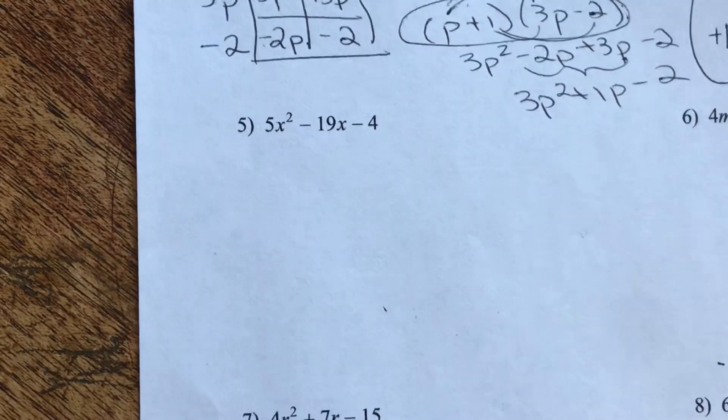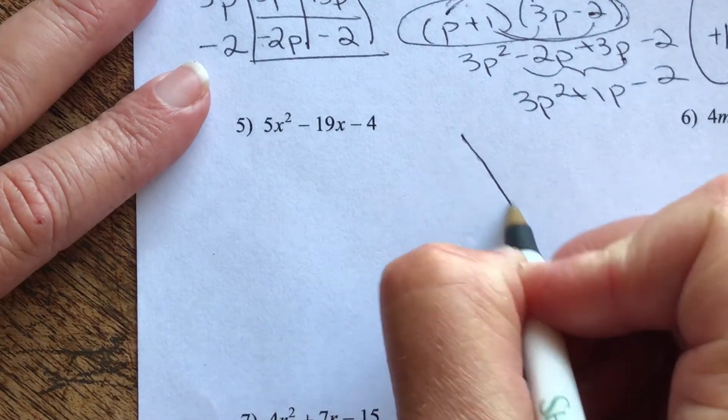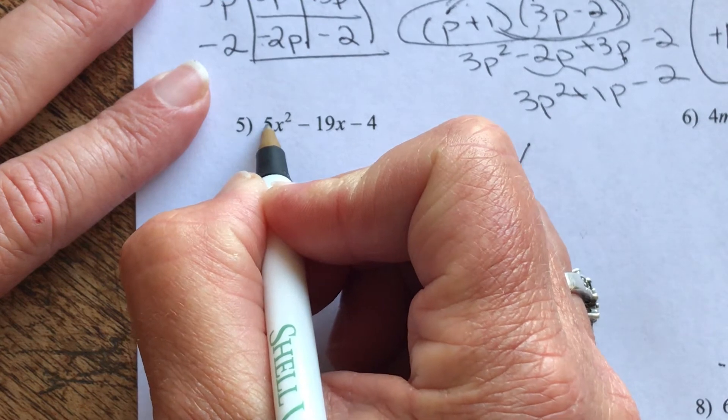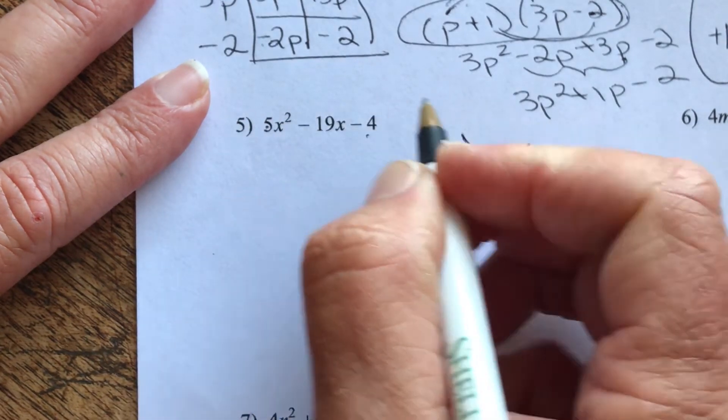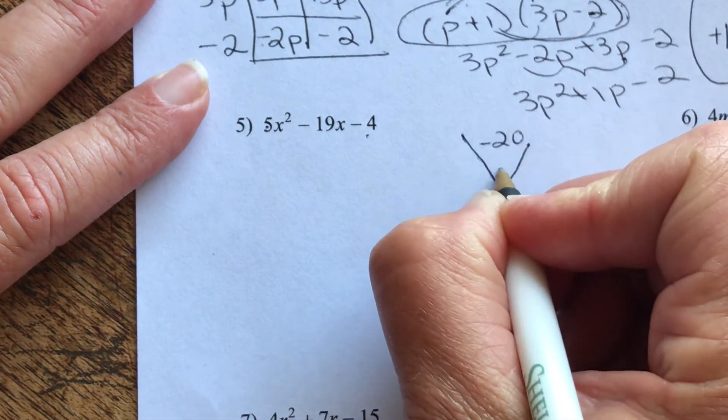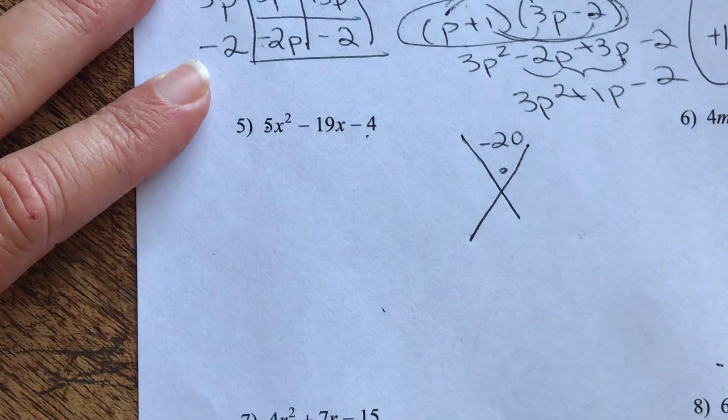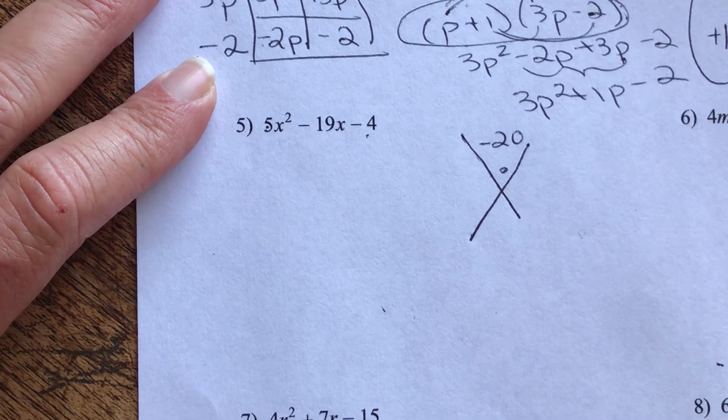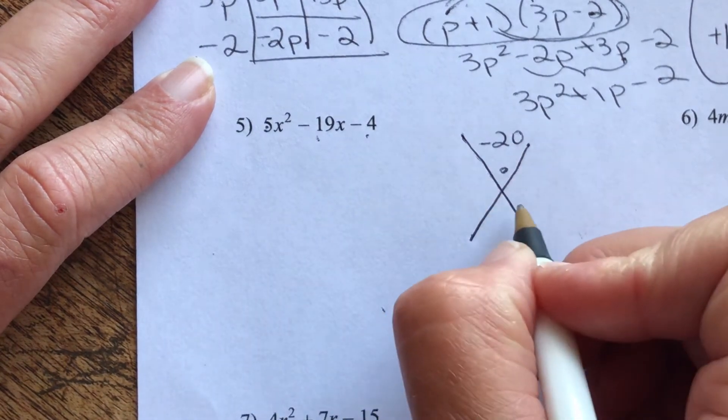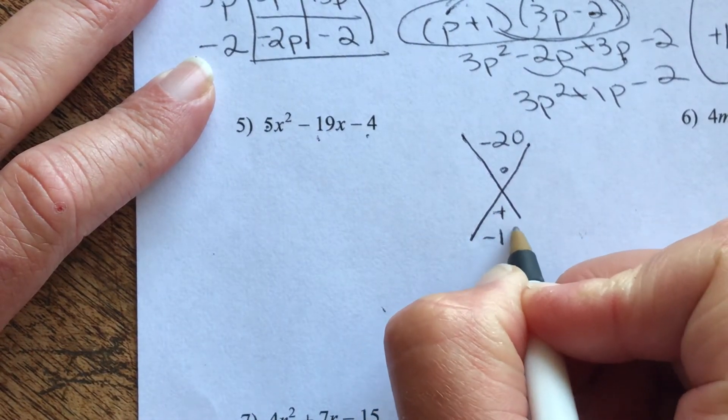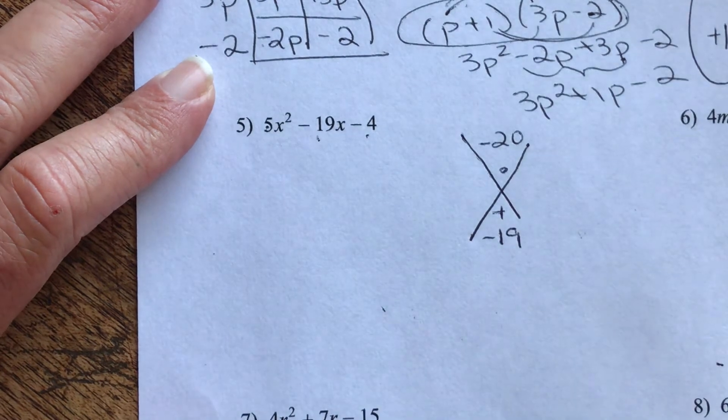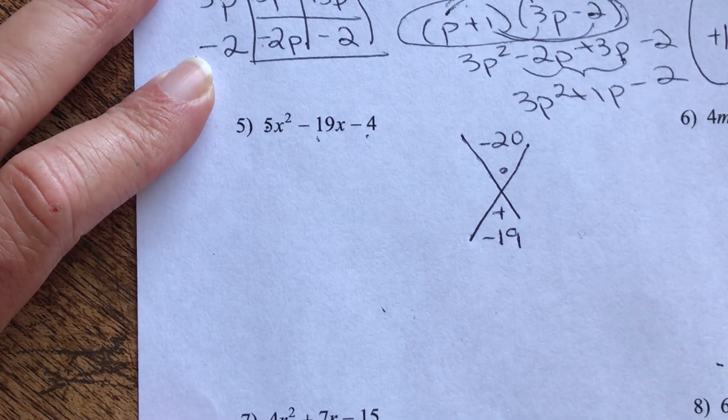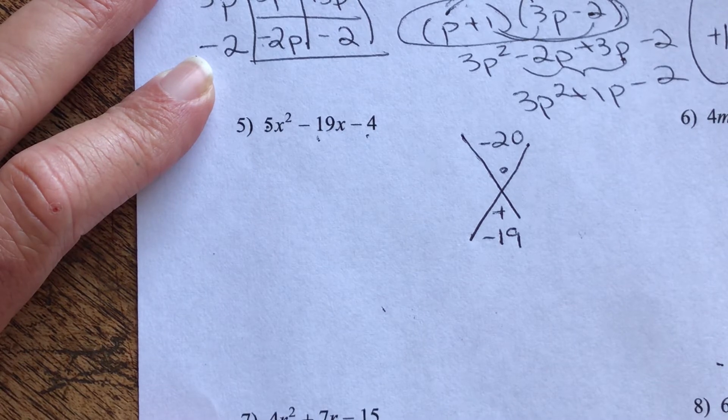Let's look at question number 5. Same thing. We're going to start with our X method. We're going to take that front coefficient, multiply it by the constant in the back to get negative 20. So we're thinking of factors of 20, specifically negative 20, that combine to give me negative 19.